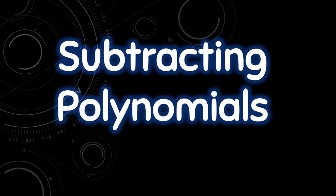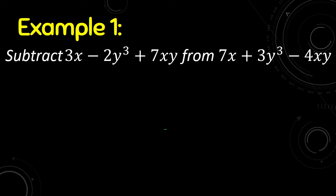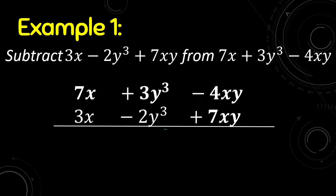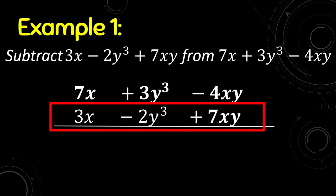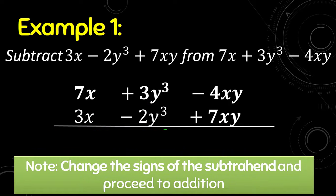Let us proceed to subtracting polynomials. For example, subtract 3x minus 2y³ plus 7xy from 7x plus 3y³ minus 4xy. Note the word 'from' — it means we write first 7x plus 3y³ minus 4xy, and our subtrahend will be 3x minus 2y³ plus 7xy. In subtracting polynomials, aside from checking the like terms, we have a special rule for the subtrahend.